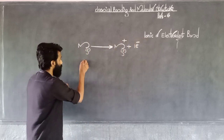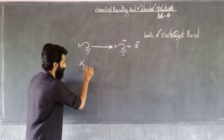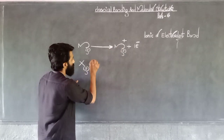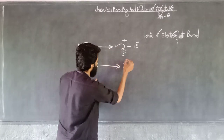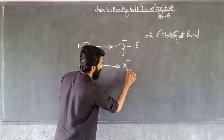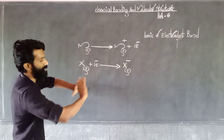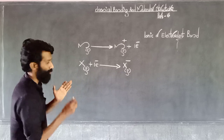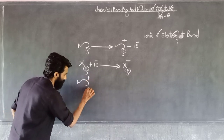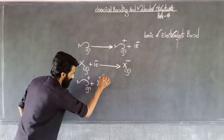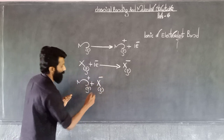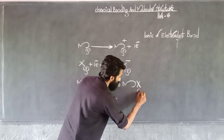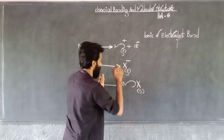Then X, the non-metal in general, receives the electron. X becomes X minus — an anion. That means we have a cation and an anion. M plus gas is the cation, and X minus is the anion. Together they form MX, which is a compound in a solid state.